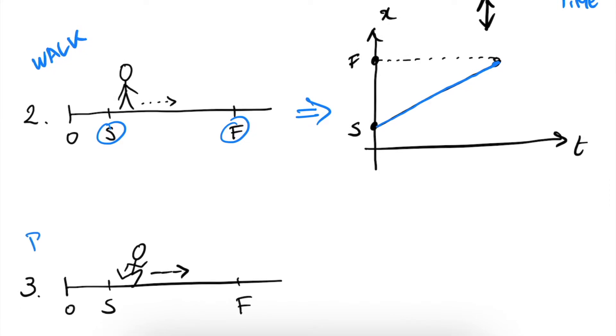In this scenario we are running from S to F. Again, we start at S and we end up in F, our final destination. So how does this translate to a XT graph? Well, let's just draw our axis first and now we have here our S and here our F again. These don't change. However, now we get to our final destination much quicker in much less time.